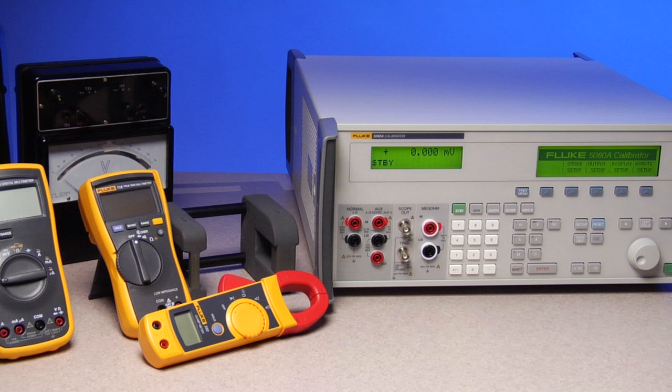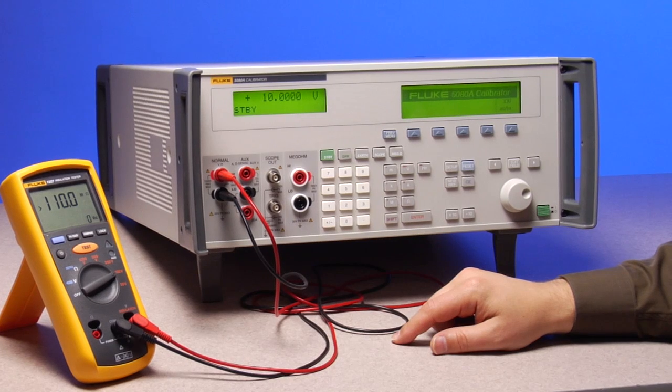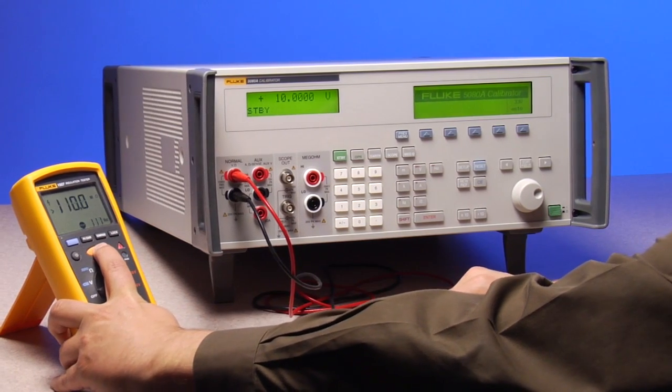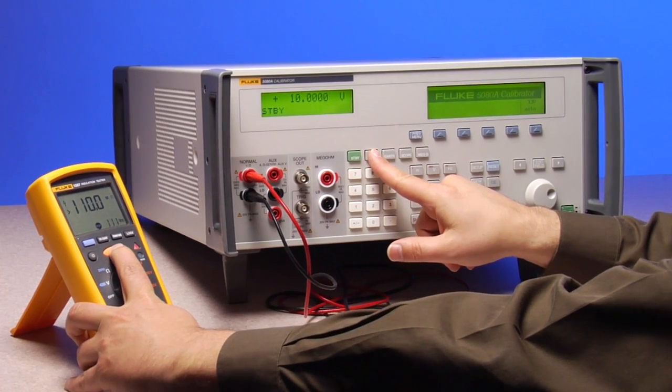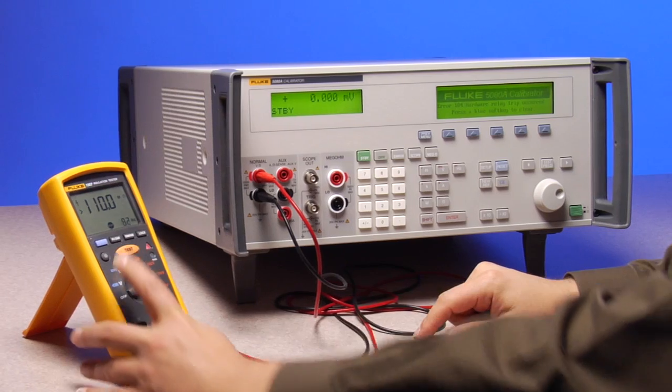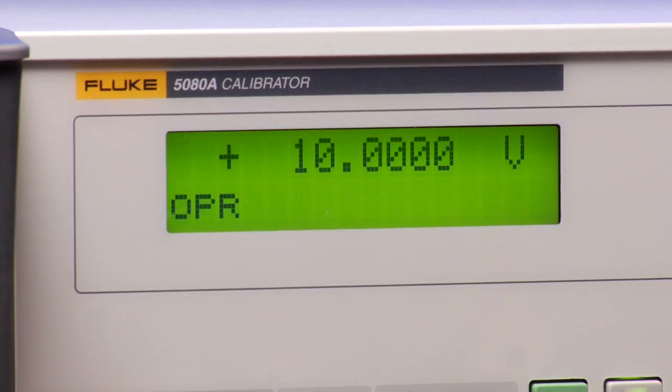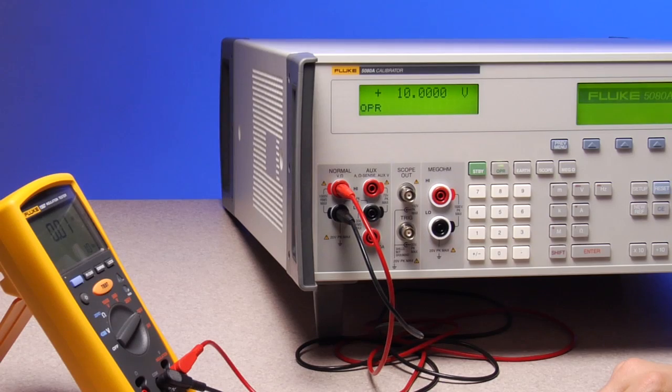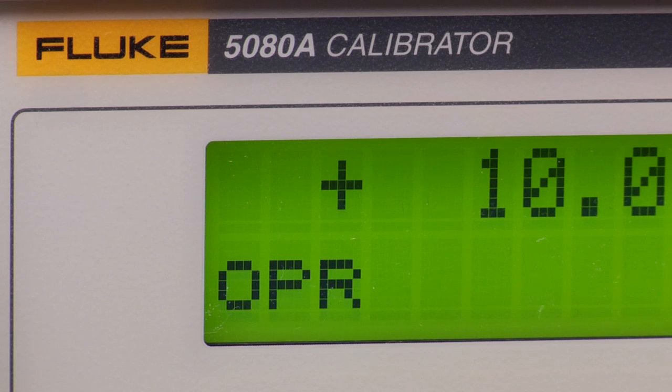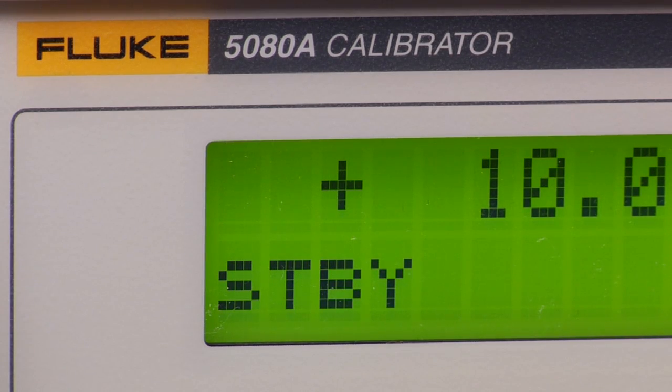This calibrator has innovative protection circuitry that prevents it from being damaged by reverse input voltage. Under standby mode the 5080A checks for harmful voltage before it changes to operating mode. Under operating mode the 5080A immediately detects harmful voltage at output terminals and automatically goes into standby.